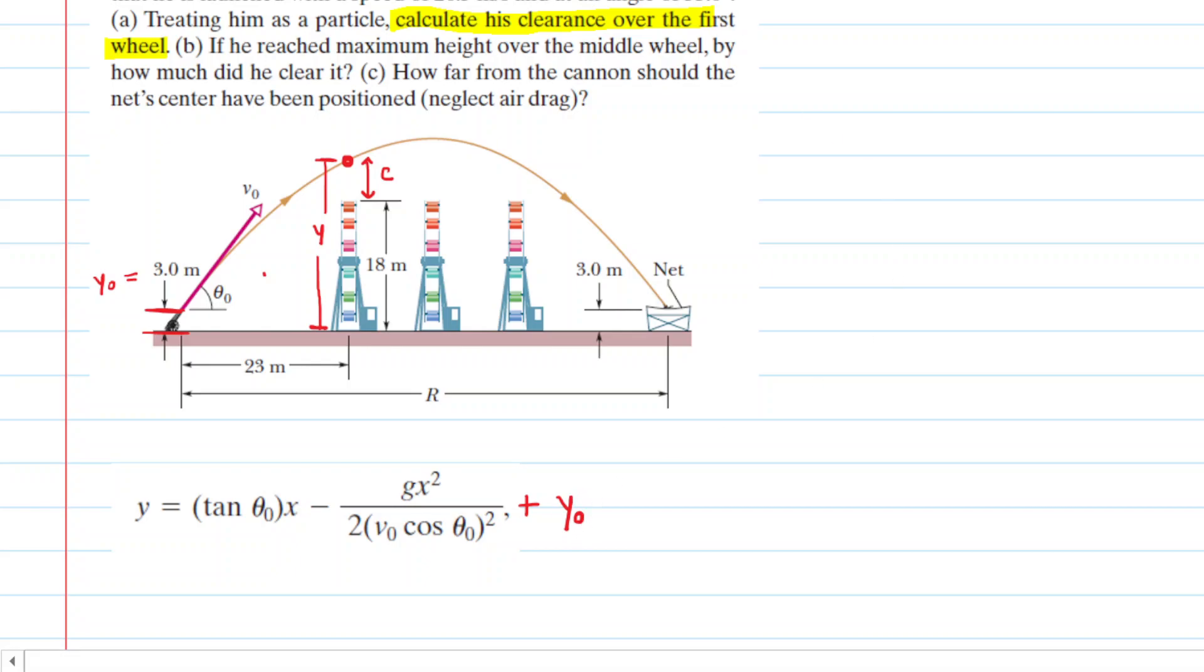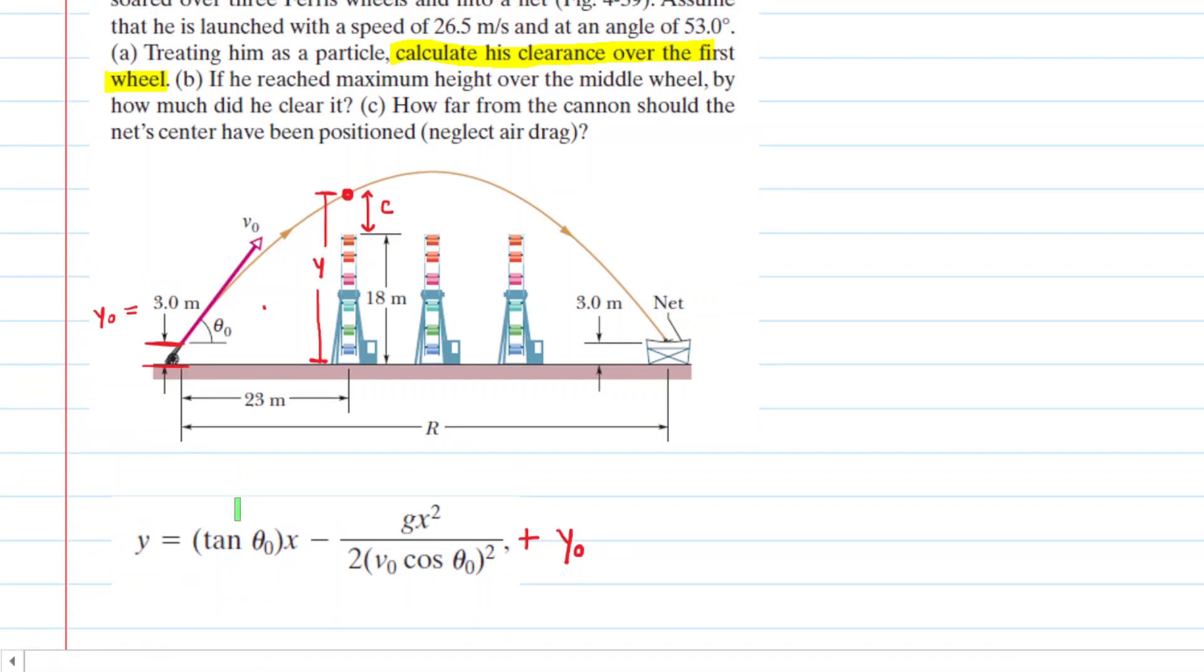We need to talk about what some of these values are. For example, X. Look where the acrobat is located. The horizontal distance to that point is 23 meters right there. So we know that X equals 23 meters.